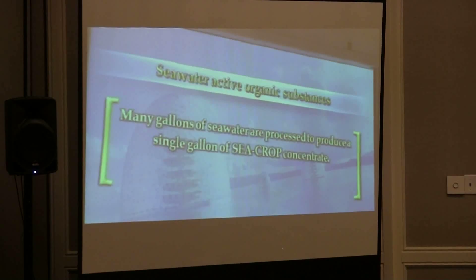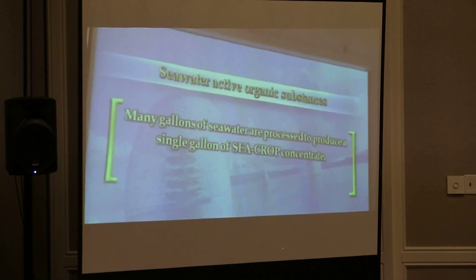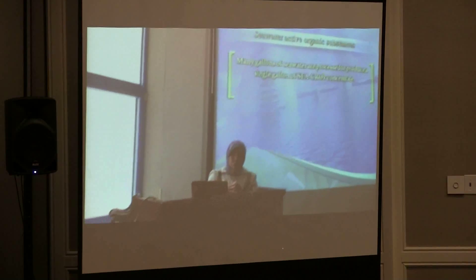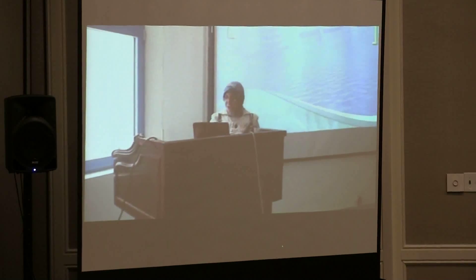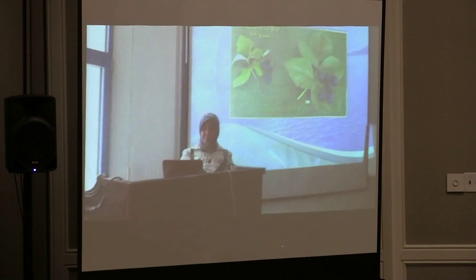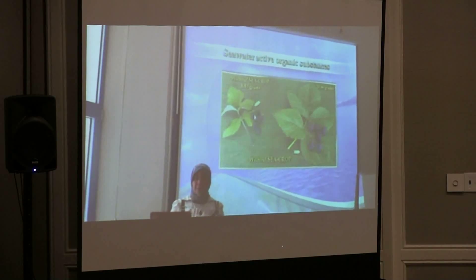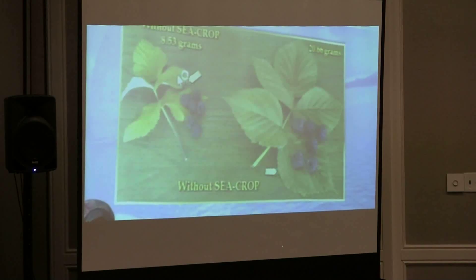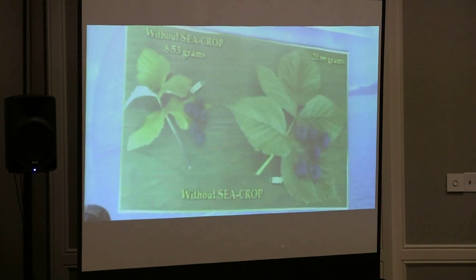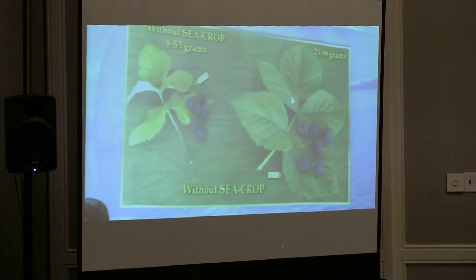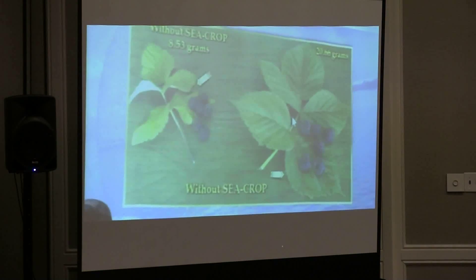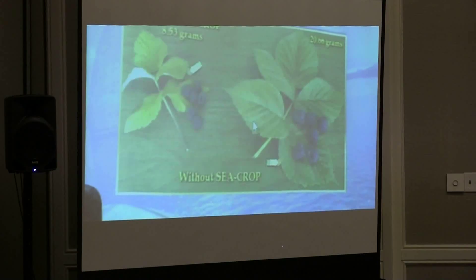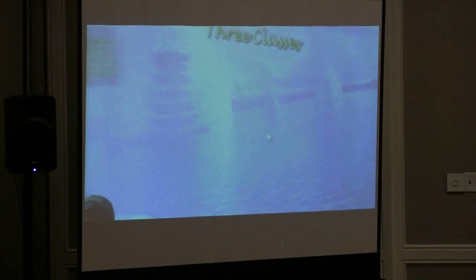Sea water actually contains relative amounts of organic matter concentrations. If we concentrate this organic matter by taking any amount of sea water and using this concentrated sea water in agriculture, we can notice the difference. Without using Seacro — which stands for concentrated sea water organic matter — compared to using Seacro in planting, you notice the difference in plant growth.